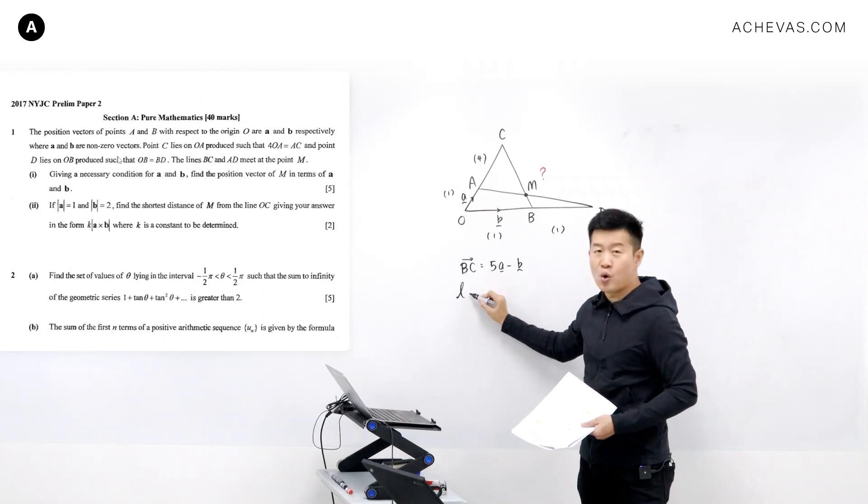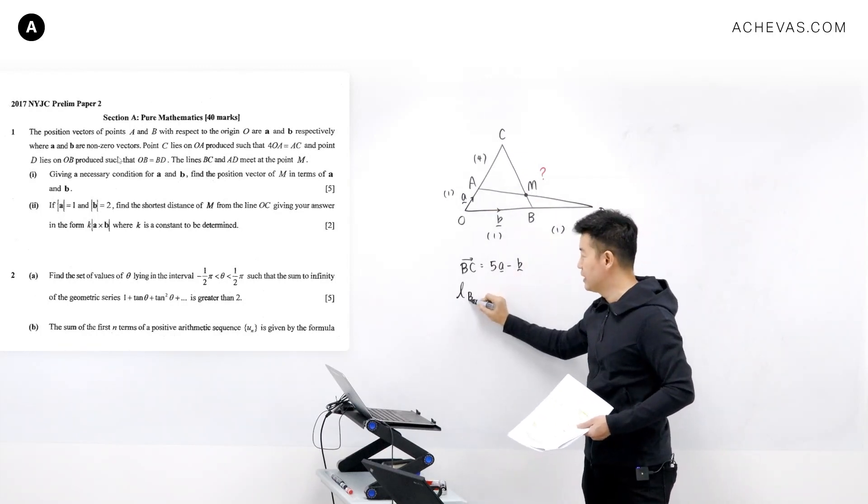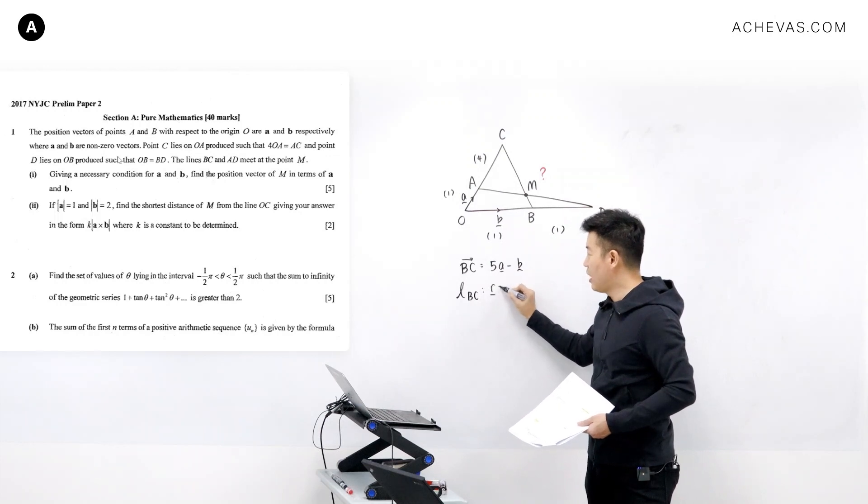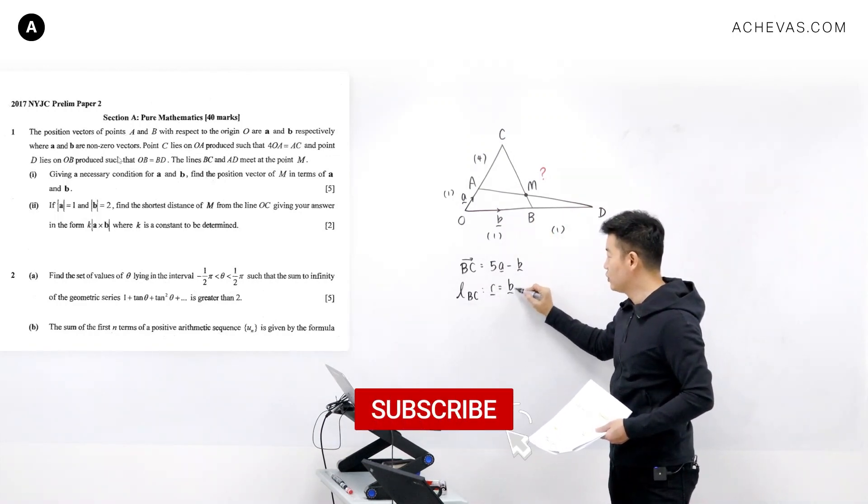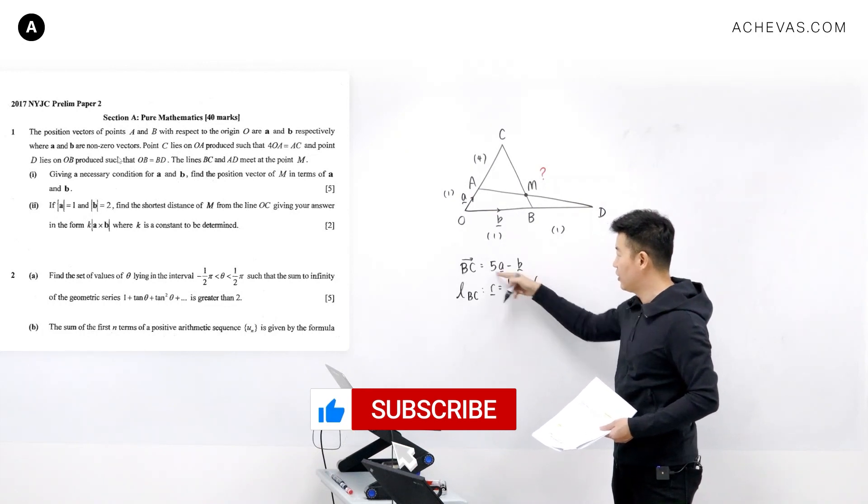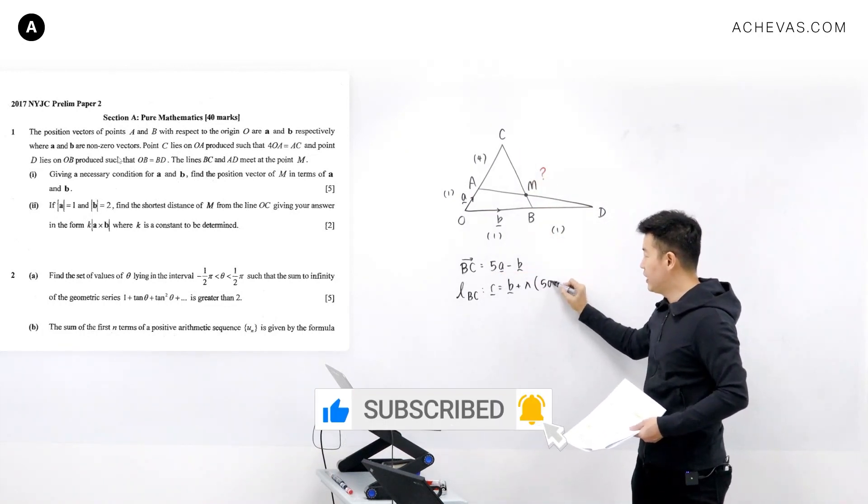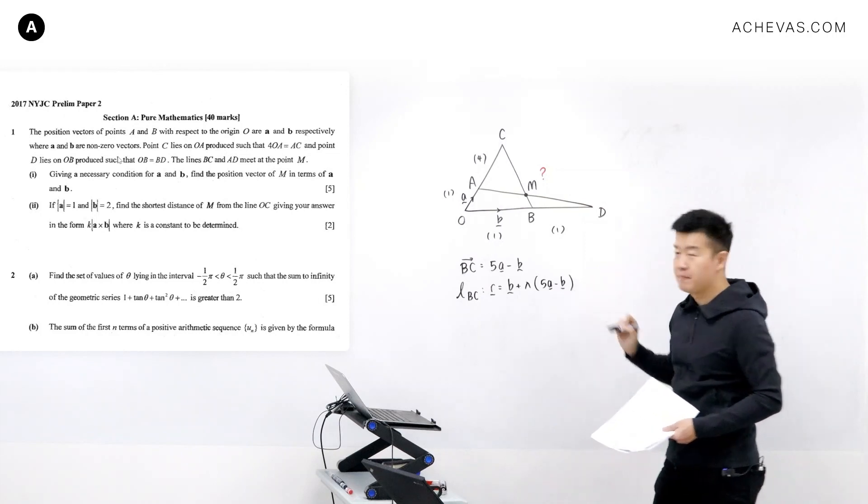So we can now code the equation of the line that passes through BC. This is going to be r is equal to, since it passes through the point b, it will be equal to b plus lambda of the vector that is parallel to this which is 5a minus b.